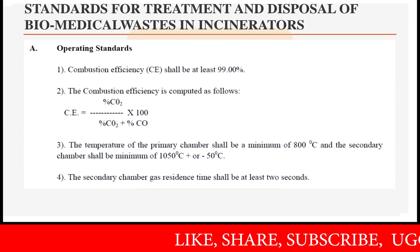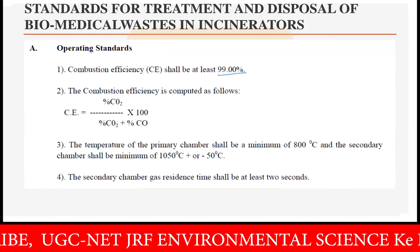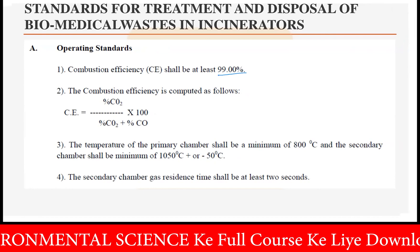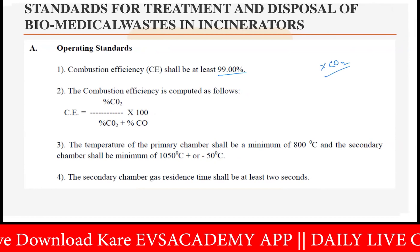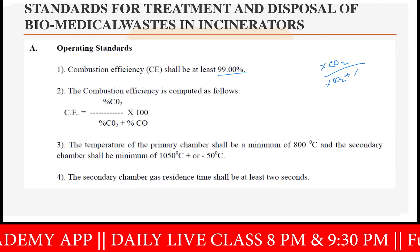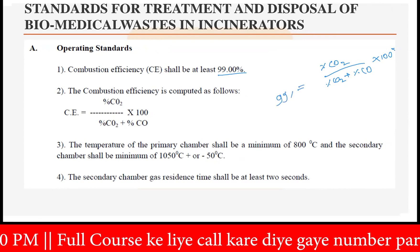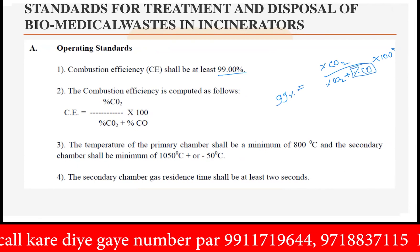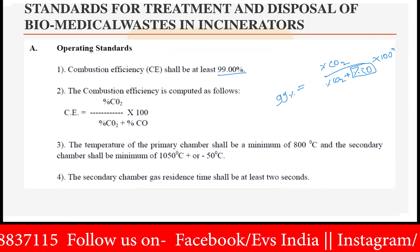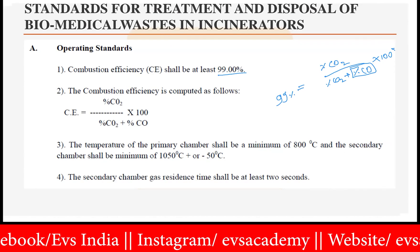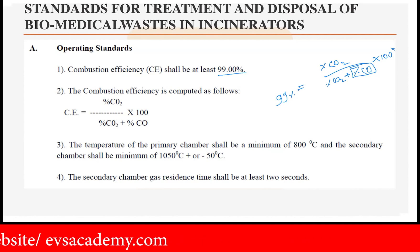The incinerator's combustion efficiency shall be at least 99%. The combustion efficiency is computed as: percent CO₂ divided by (percent CO₂ plus percent CO), multiplied by 100. This means the release of carbon monoxide should be very, very less in the environment as compared to carbon dioxide — 99% of the total should be carbon dioxide. There should be no more than 1% chance of having carbon monoxide when operating any incinerator.